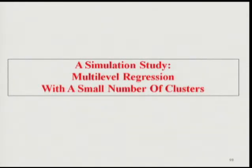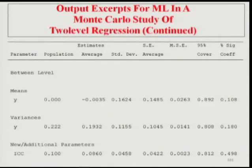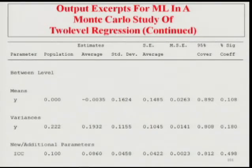In the ML Monte Carlo simulation study on slide 101, we focus on 95% coverage — how often does the ML confidence interval cover the true value? In 100 replications it should be approximately 0.95. It doesn't: it's 0.80 or 0.81, whereas it should be 0.95. The ICC coverage is also off. So in a Monte Carlo study we can demonstrate that ML doesn't work well with a small number of clusters.